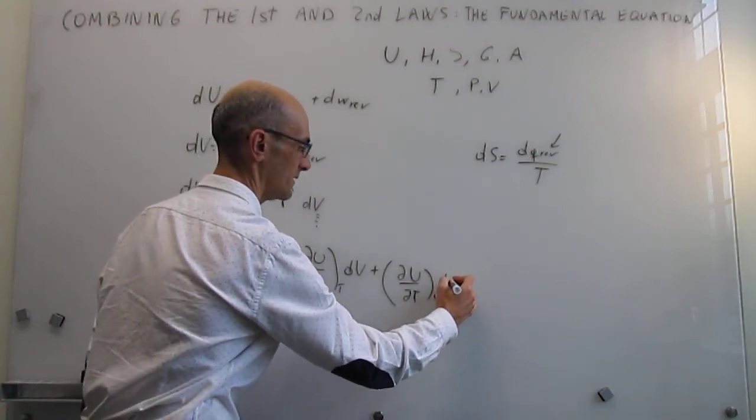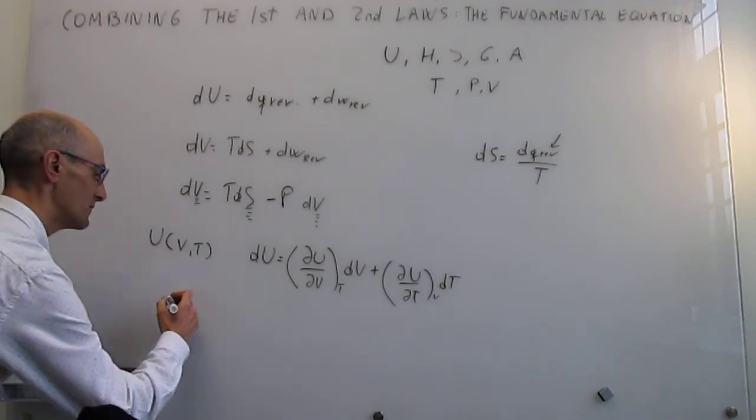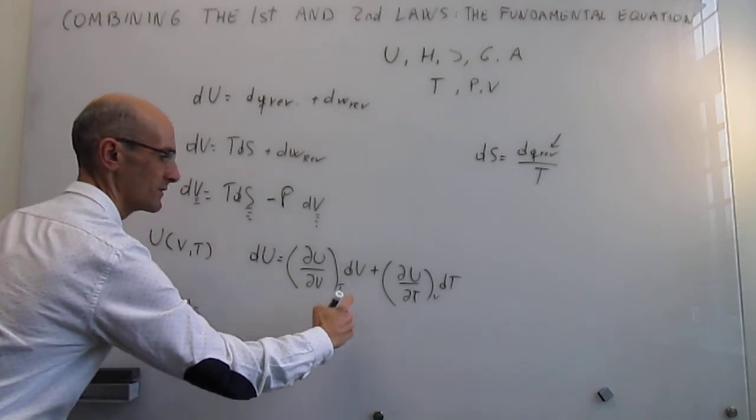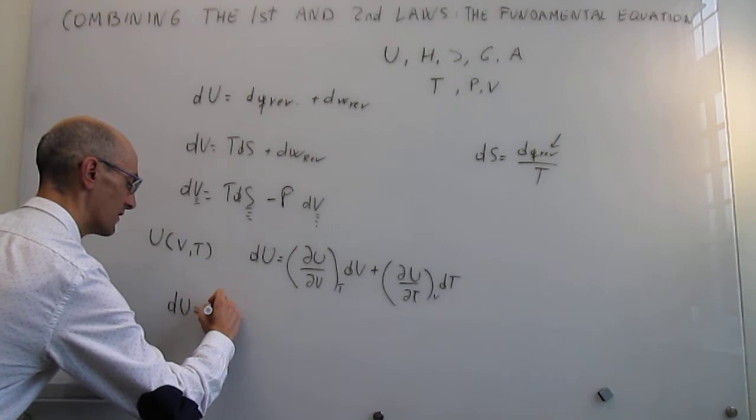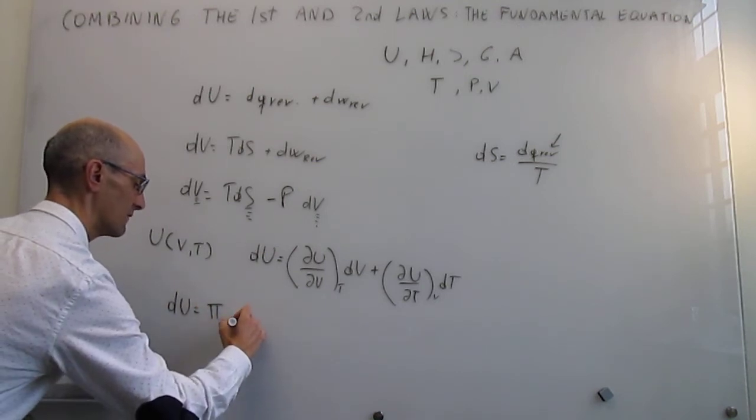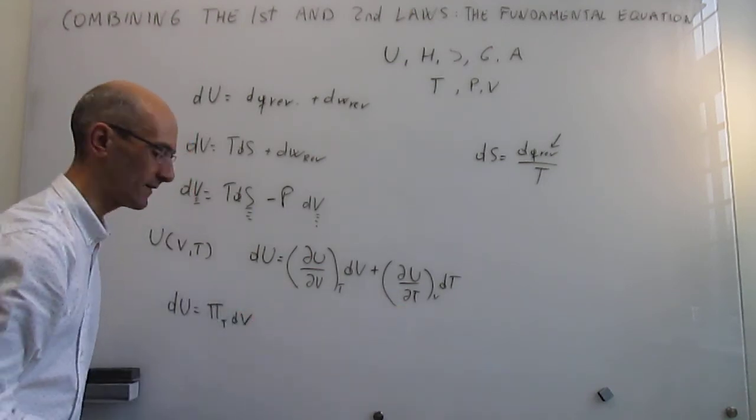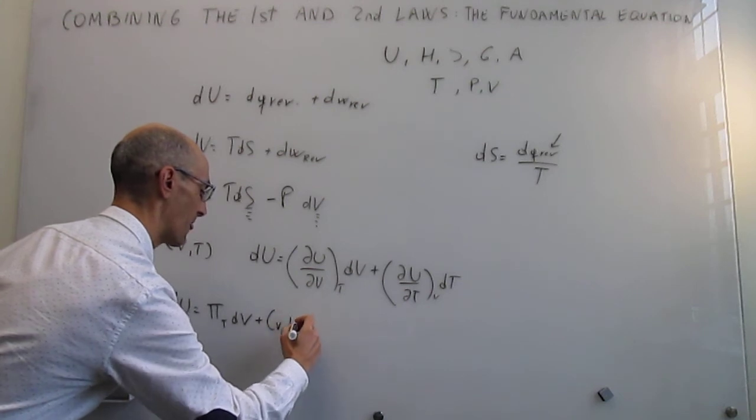And then we actually moved a little further to then come up here with the values of these partial derivatives. This we called the internal energy pi of T dV, and then this is the heat capacity at constant volume C_V dT.